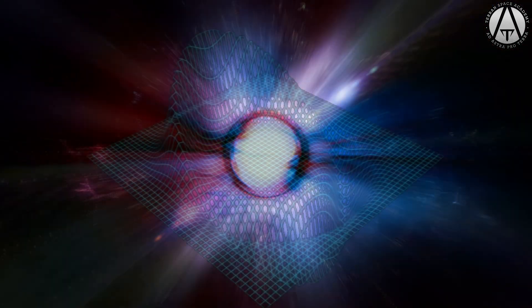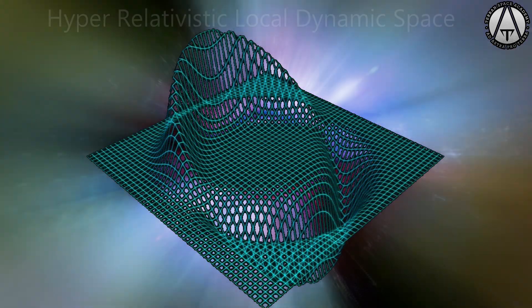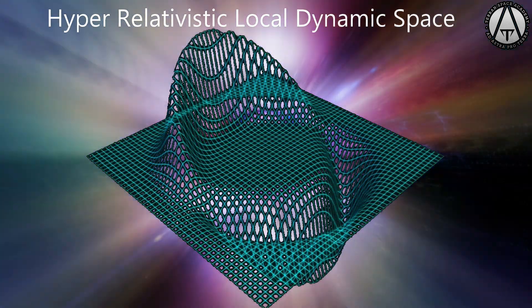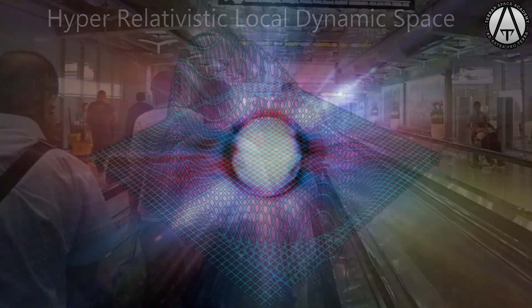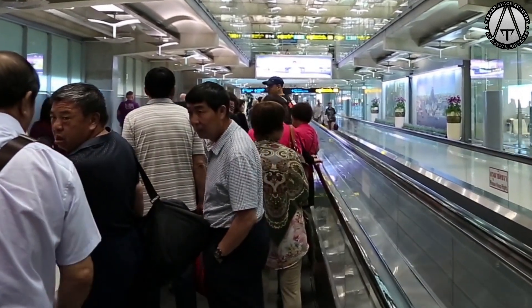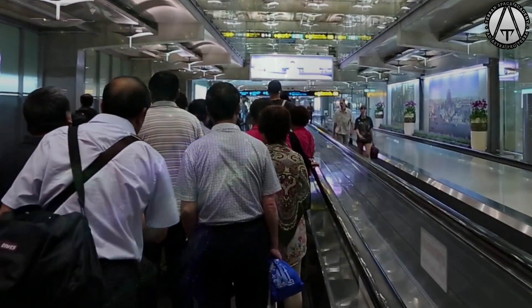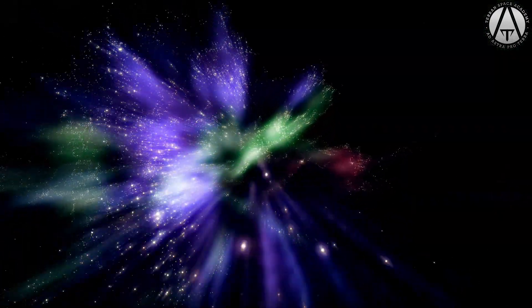Dr. Alcubierre developed a model that would allow a ship residing in flat space to contract the space ahead of it, while expanding the space behind it. This warp bubble is technically known as a hyper-relativistic local dynamic space. And like a moving walkway at the airport, would move the ship through space without the ship itself actually moving. Space would be moving. And space can move and expand or contract faster than the speed of light.